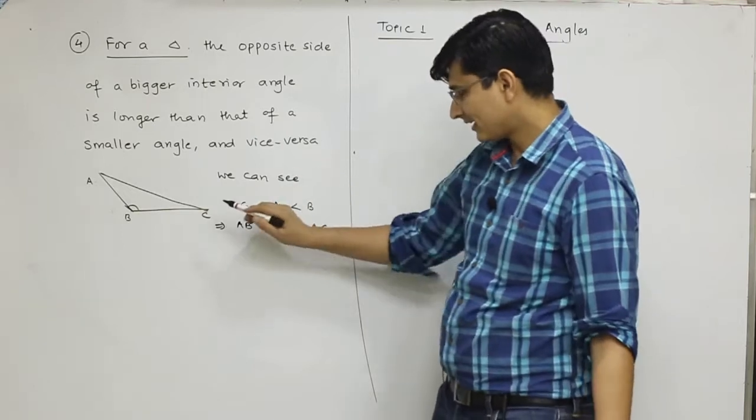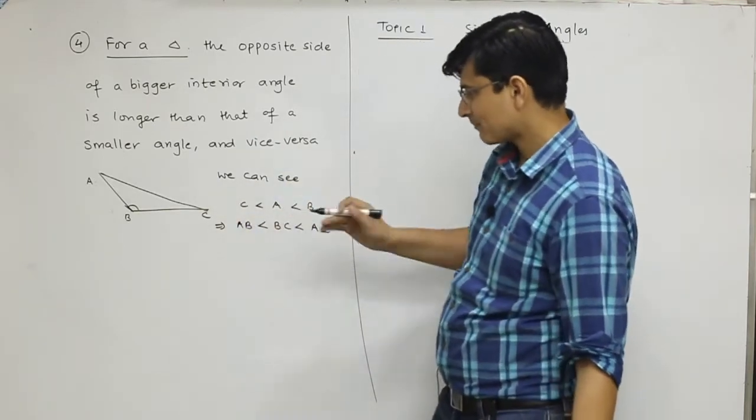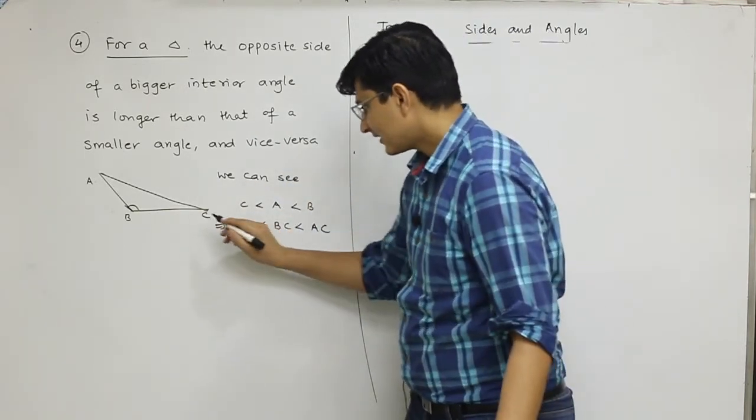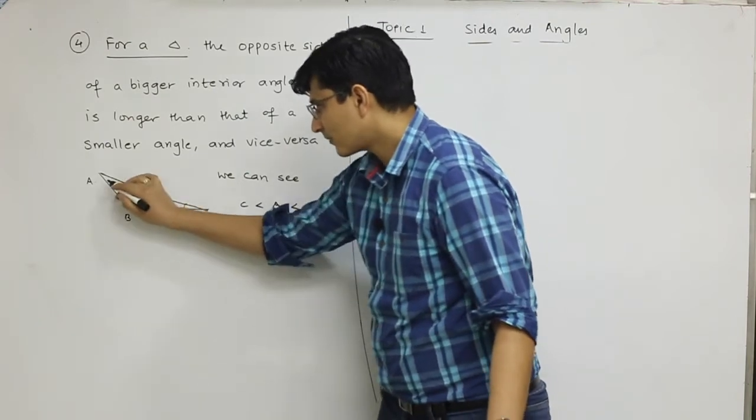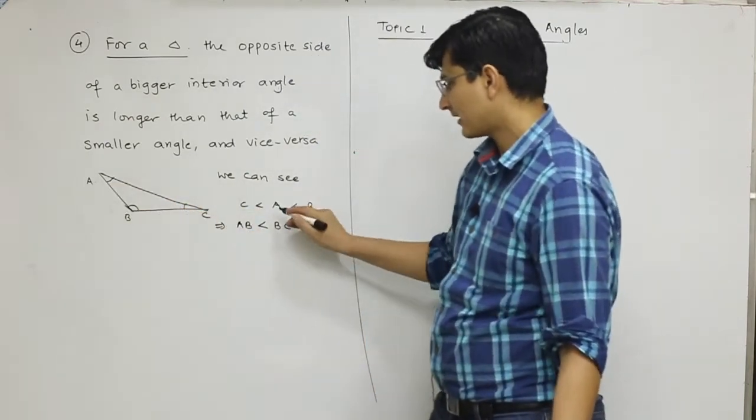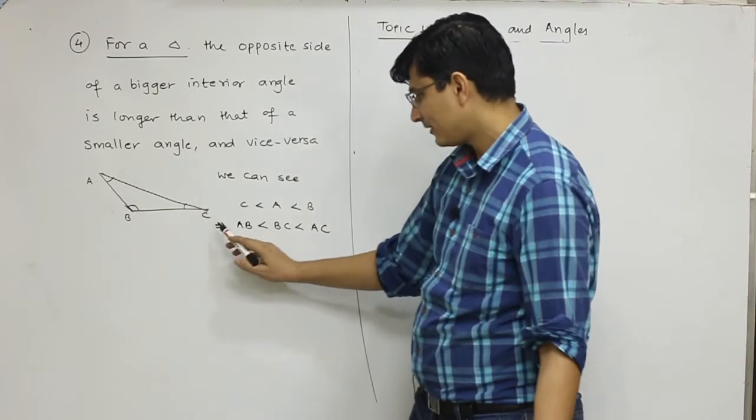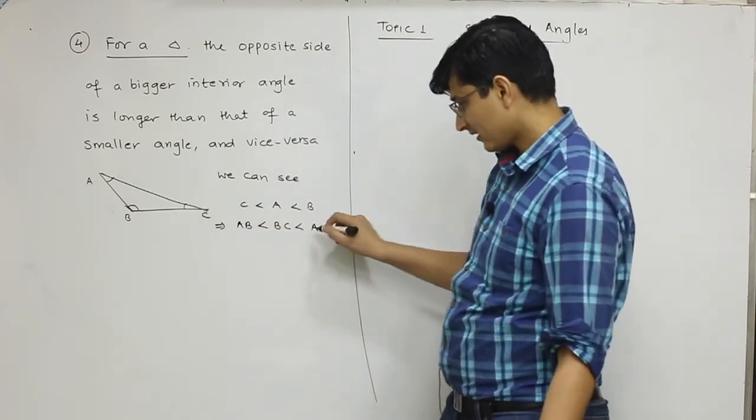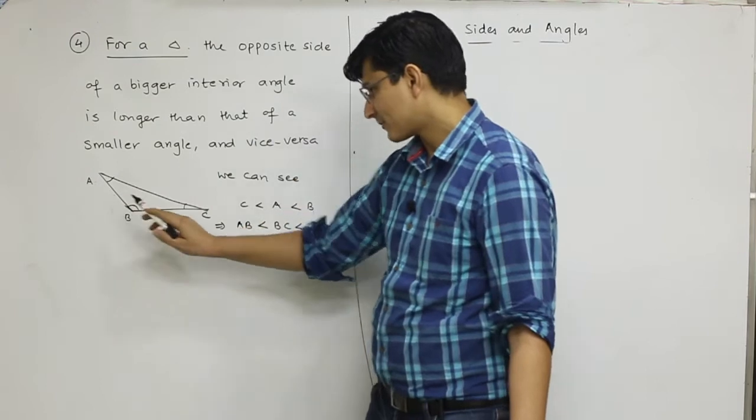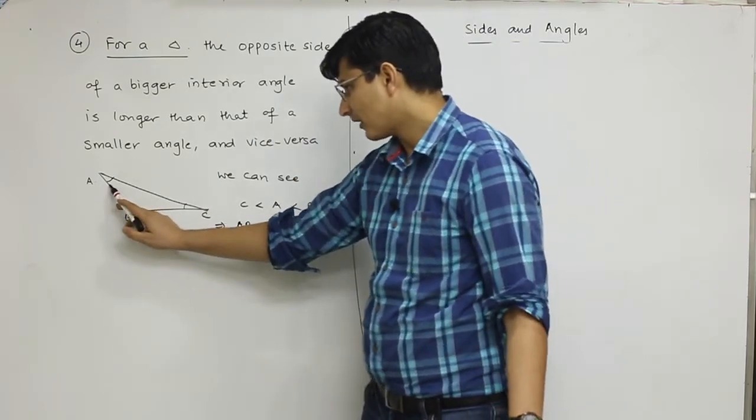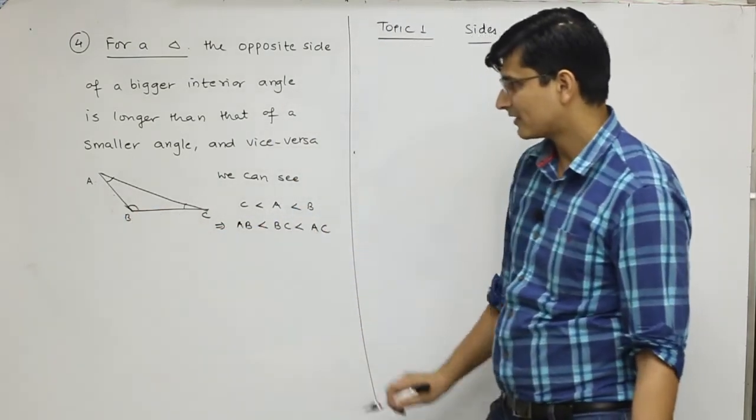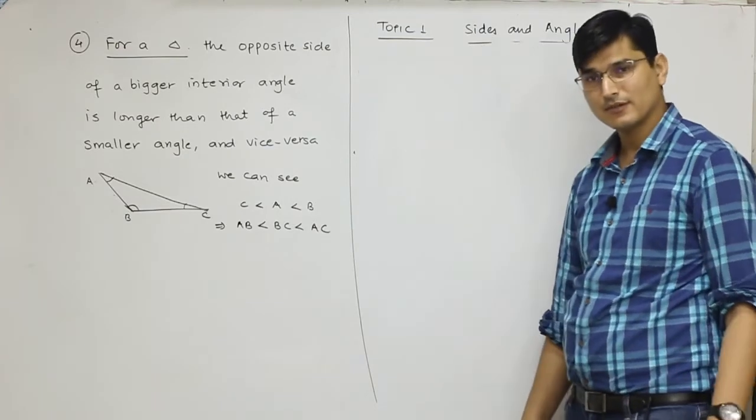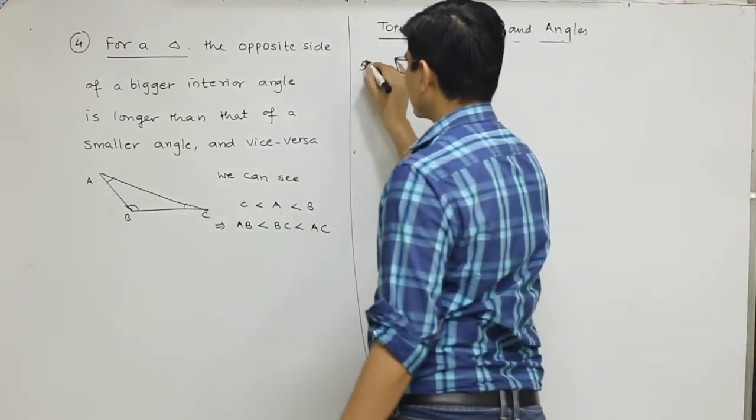So here it's written: for a triangle, the opposite side of a bigger interior angle is longer than that of a smaller angle. I've taken this example to show that angle C is smallest, then angle A, and angle B is biggest. The opposite sides will also be in the same inequality ratio.